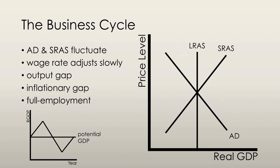An inflationary gap occurs when real GDP exceeds potential GDP. Full employment equilibrium is where aggregate demand intersects short-run and long-run aggregate supply, and where real GDP is equal to potential GDP. Below full employment equilibrium is when potential GDP exceeds real GDP, and short-run aggregate supply and aggregate demand intersect at a quantity of real GDP below potential GDP.